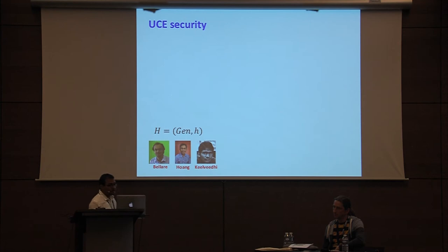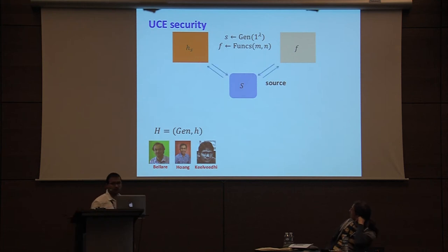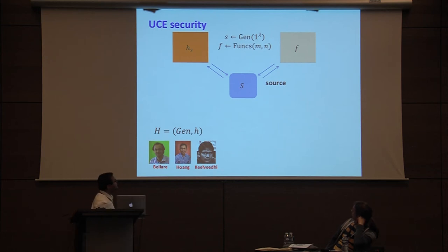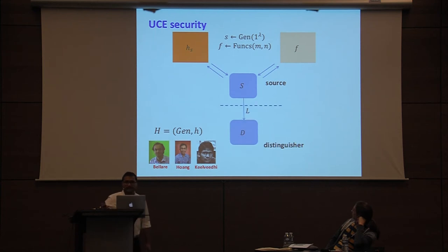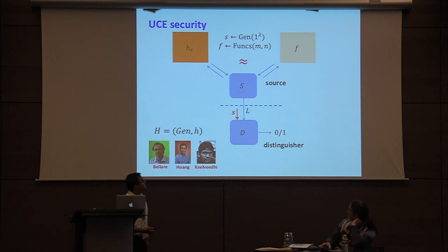UCE is a two-stage security notion for hash functions, where the first stage adversary, called the source, is given access to a hash function or to a truly random function. The source makes multiple queries to its oracle and outputs a leakage to the second stage adversary, called the distinguisher, which in addition learns the seed S and outputs a bit B. UCE expects that these two worlds be indistinguishable.